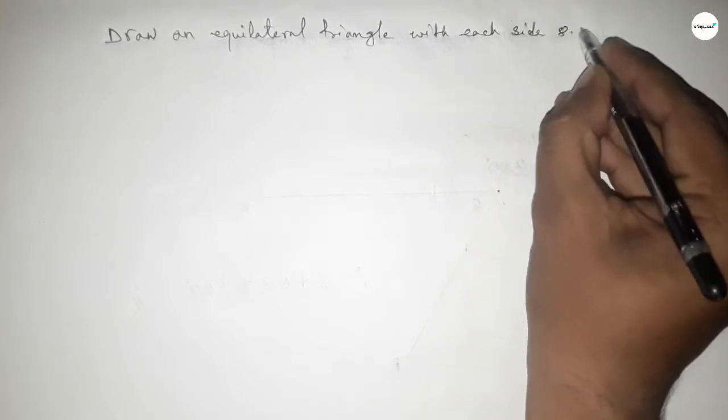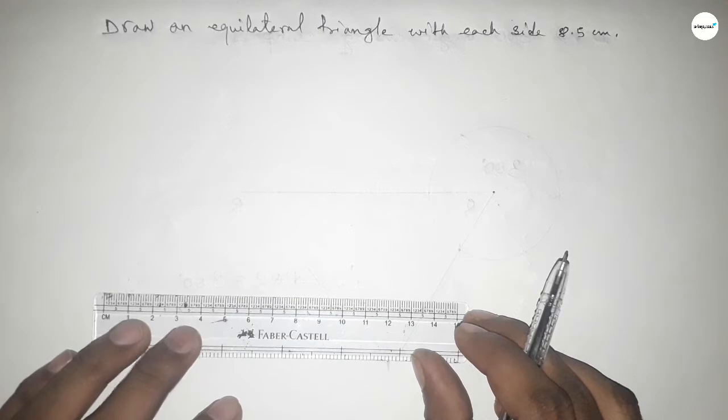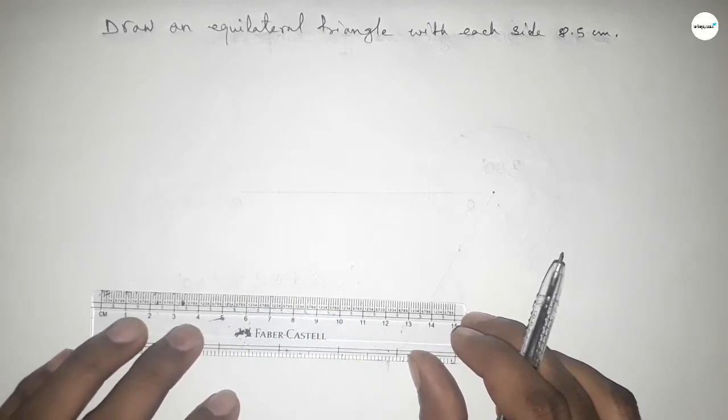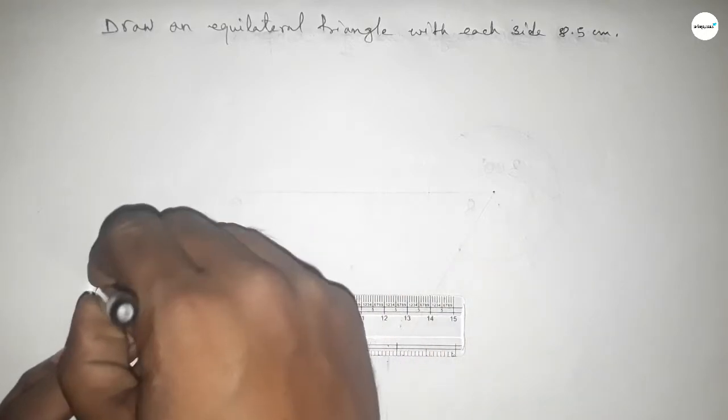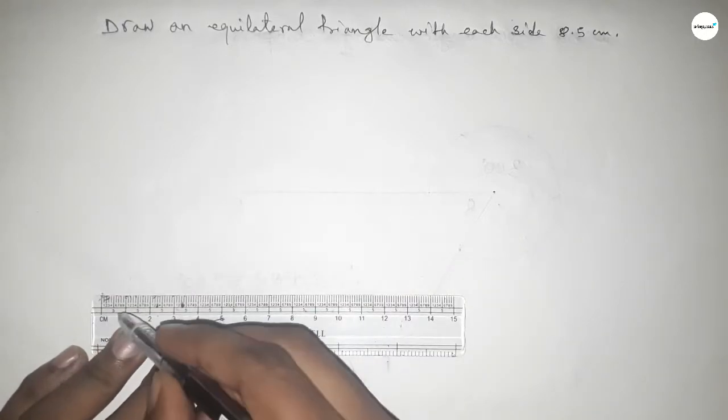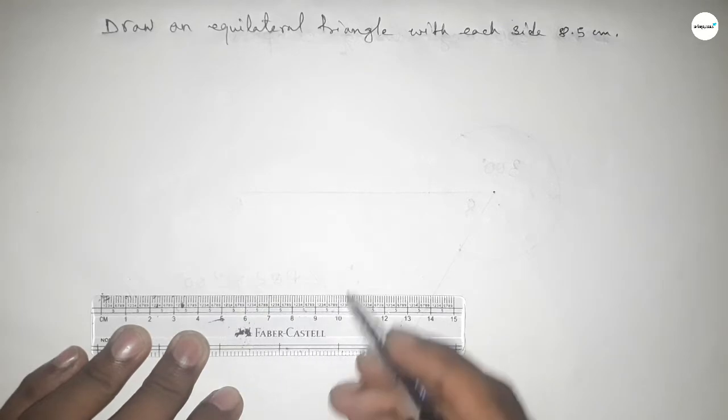So let's start the video. First of all, we have to draw a line of length 8.5 centimeters. This is starting at 0 and this is 1, 2, 3, 4, 5, 6, 7, 8, and this is 8.5 centimeters.